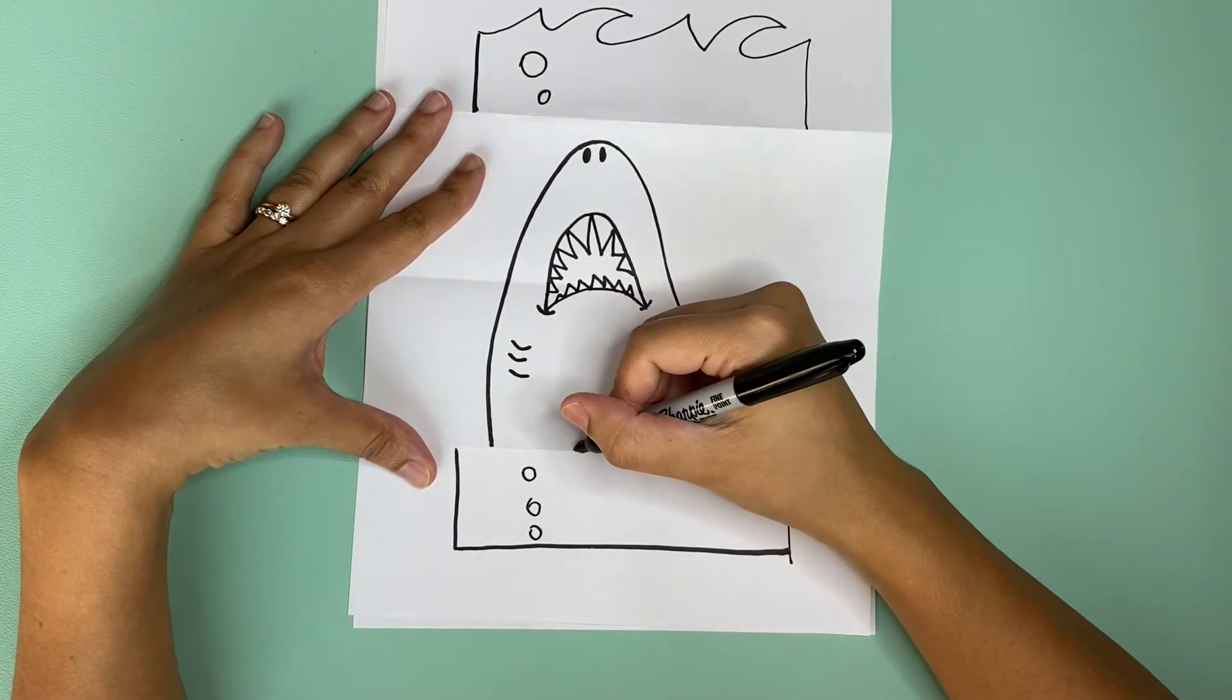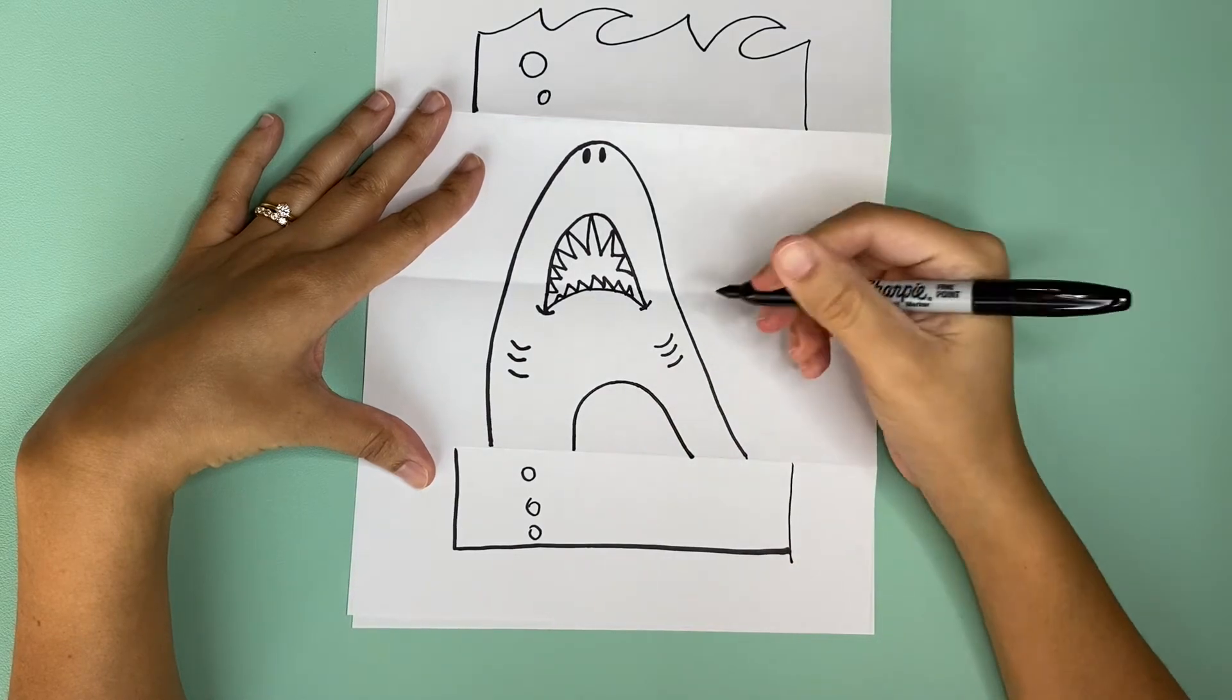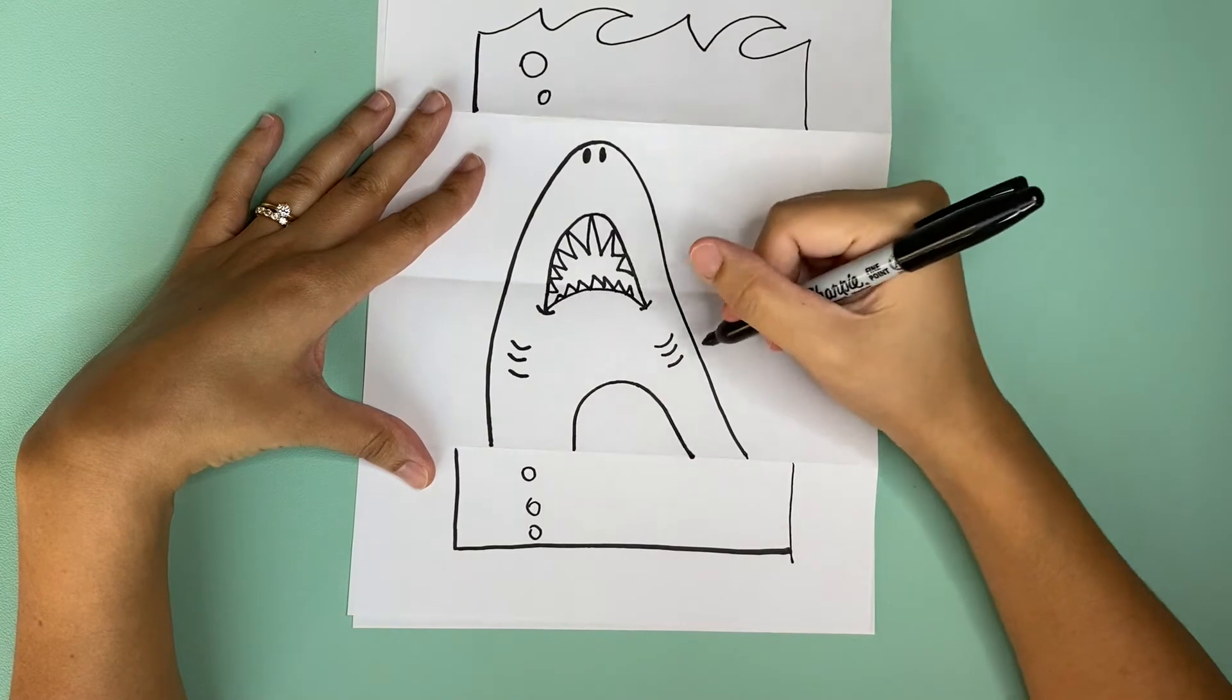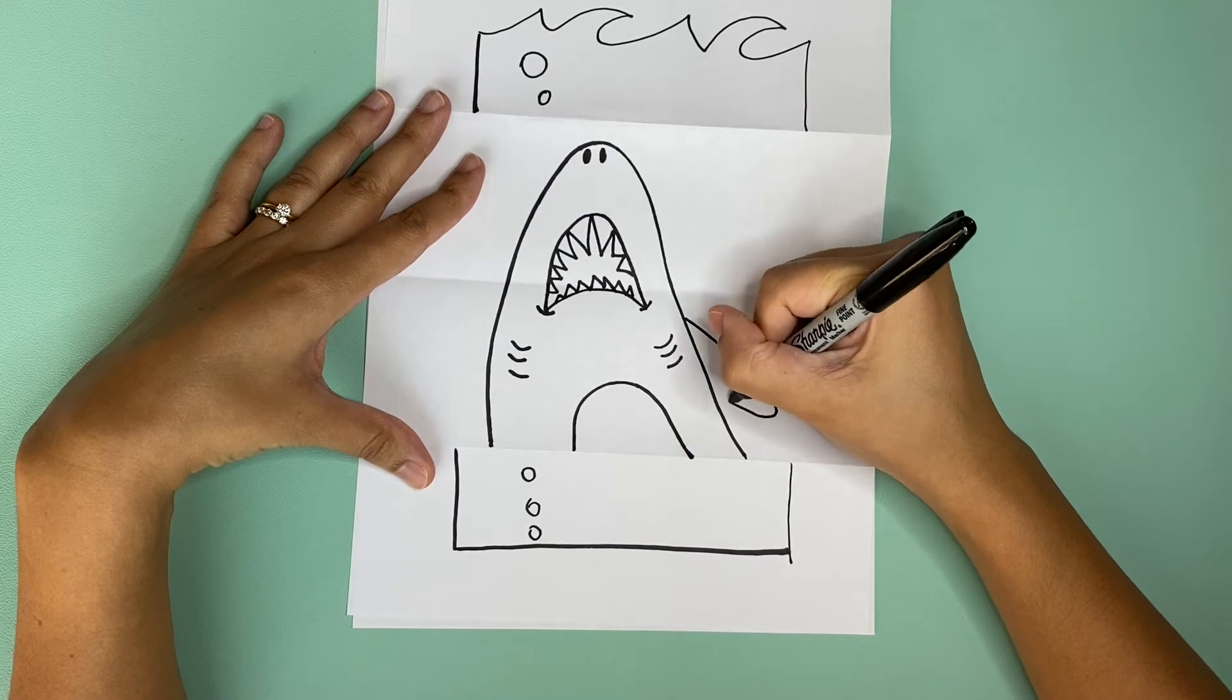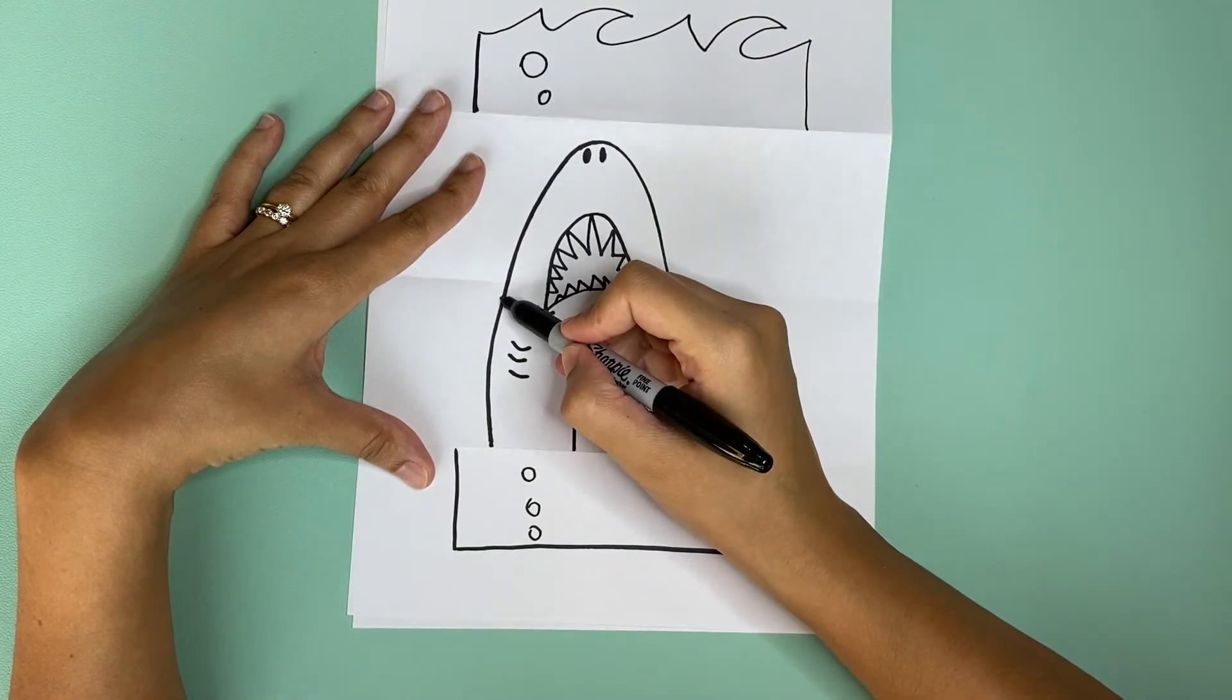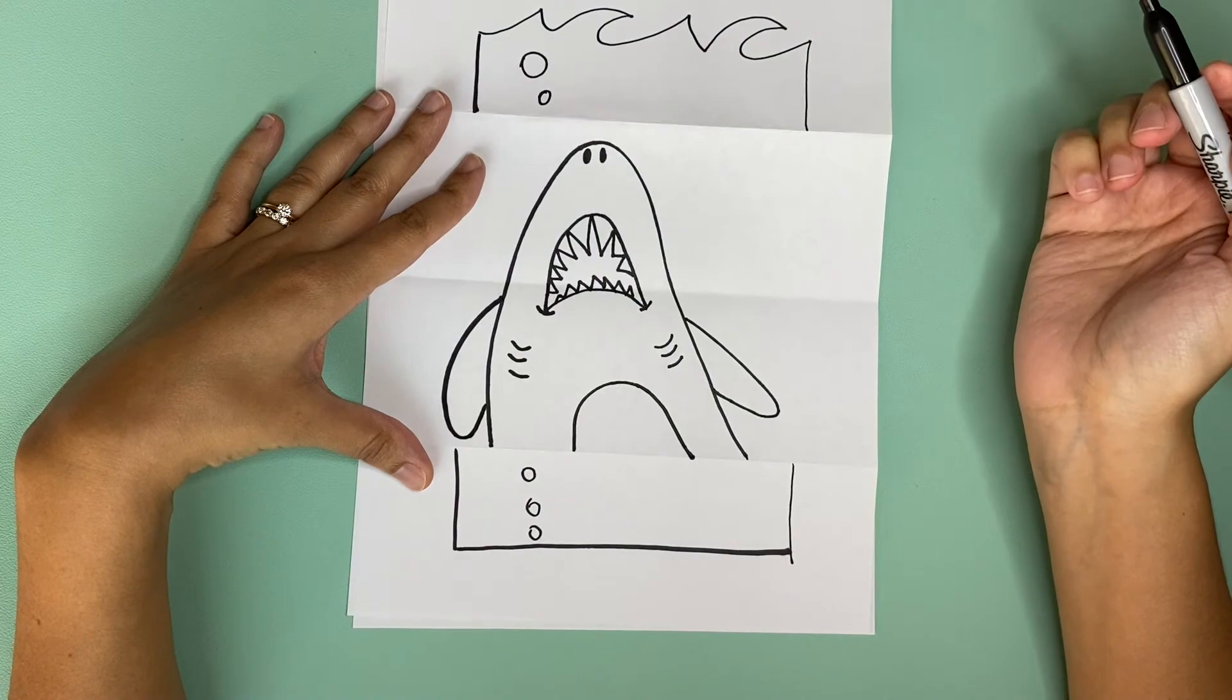We're going to draw his stomach by making a curve across. We'll make his fins by drawing two kind of lines like that. There we go.